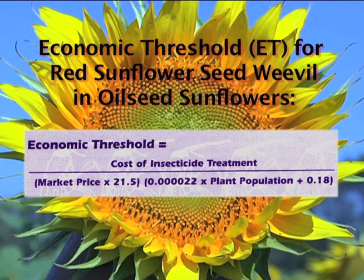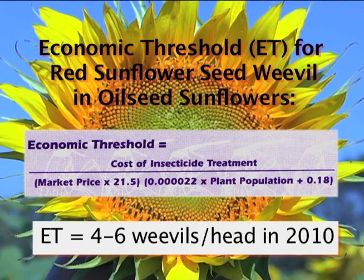The economic threshold for the red sunflower seed weevil is different in oilseed sunflowers than confection sunflowers. To decide whether to use insecticide to control the red sunflower seed weevil, it's necessary to determine the economic threshold for this year. The economic threshold is based on the cost of insecticide per acre, the market price of sunflowers in dollars per pound, and the plant population per acre. The economic threshold can be calculated using this formula. Using the cost of insecticide between eight and ten dollars per acre, the economic threshold is near four to six weevils per head this year.